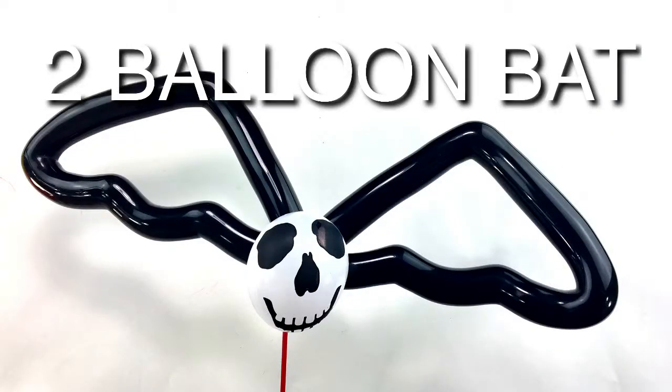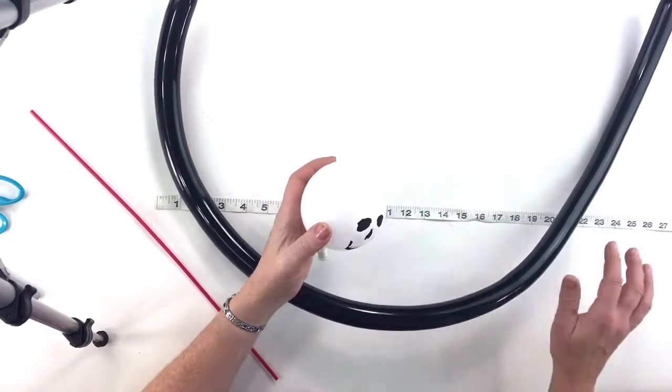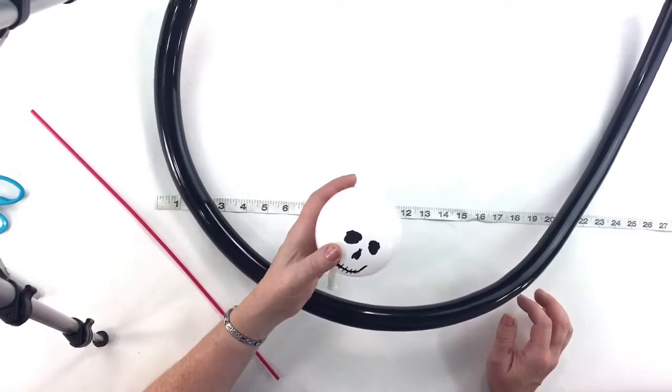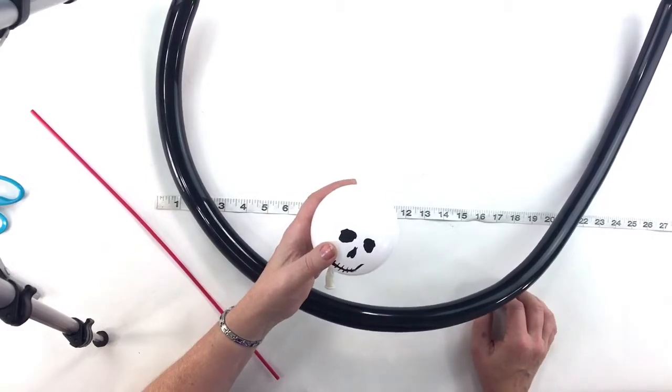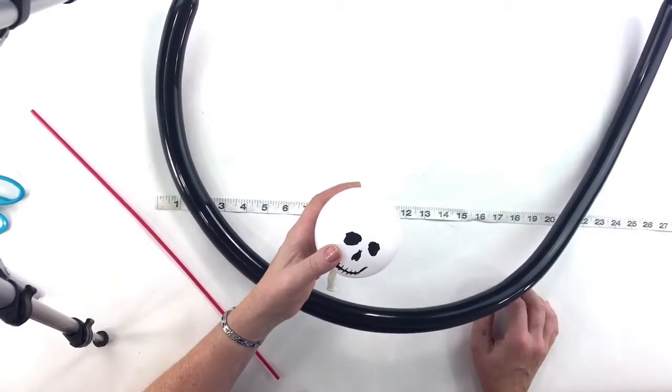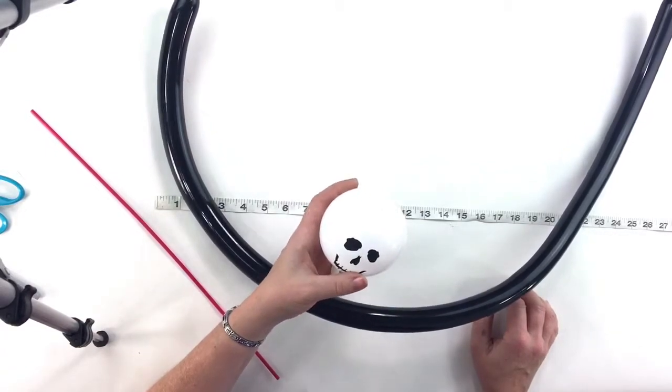Now I'm going to show you a bat with a 160 for both wings. I'm going to use a skull face and I'm not going to put any pinch twist in this one, so you don't absolutely have to put the pinch twist in. It's just an option that I like to do to hold the head up.